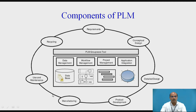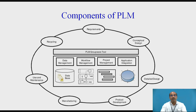Manufacturing then feeds into the use and maintenance part, where after-sales services are provided to the customer — such as the warranty period, regular maintenance, and annual maintenance contracts. These all come under the category of use and maintenance. The final stage is recycling, where either the product will be in a reincarnation form or it will go out of the market.